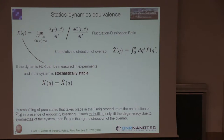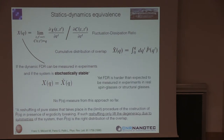They use the term 'stochastically stable,' but I won't go into details. Yet, as far as I know, the fluctuation-dissipation ratio in real materials is harder than expected to measure. And anyway, I'm not aware of any measurement of the P(Q) made afterwards. So if any one of you have news about it, I would be more than eager to know.